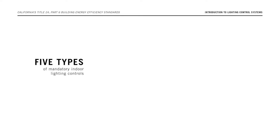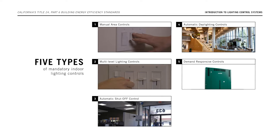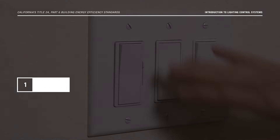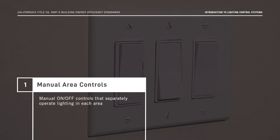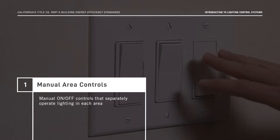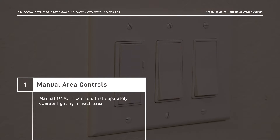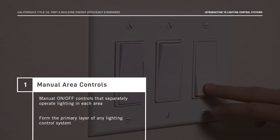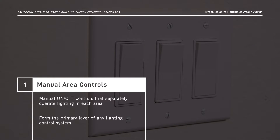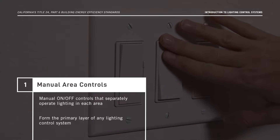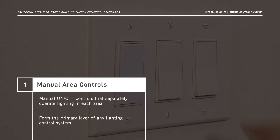Now we'll tell you about the five types of mandatory indoor lighting controls and review the control interactions required under the Energy Code in Section 130.1. Starting with manual area controls — they're manual on-off controls that separately operate lighting in each area. An area is any space with ceiling height partitions or walls. These controls form the primary layer of any lighting control system and have been required under the Energy Code since its inception in 1978.